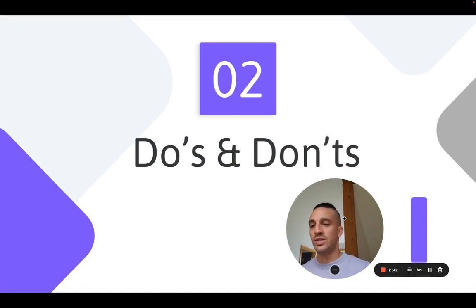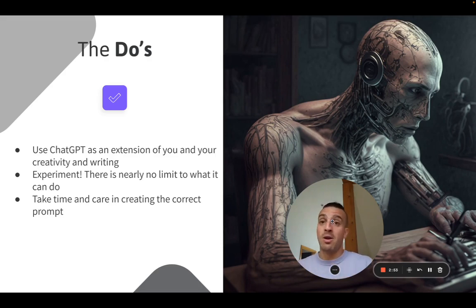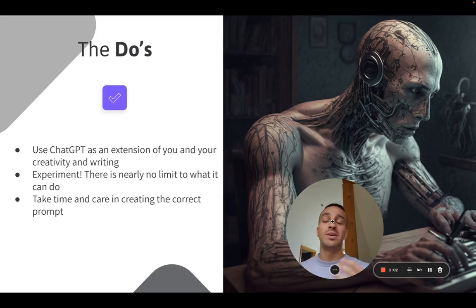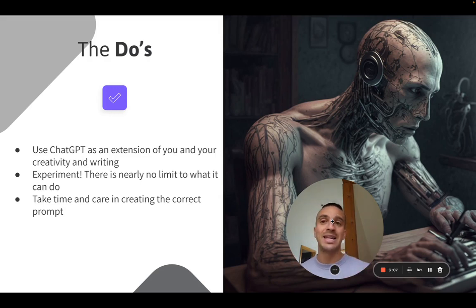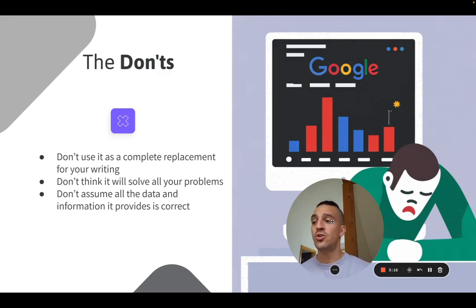With that, we get to the do's and the don'ts when using this program. The do's: use ChatGPT as an extension of your creativity and your writing. Experiment as much as you can. This tool has nearly no limits — from helping you code when you don't know how to write a piece of code, to helping you build incredible business plans, to really whatever you can think of. But take time and care in creating the prompt. The don'ts, particularly when it comes to digital marketing and your SEO efforts, is don't use this as a complete replacement for your writing. That's when you start seeing your content getting penalized.